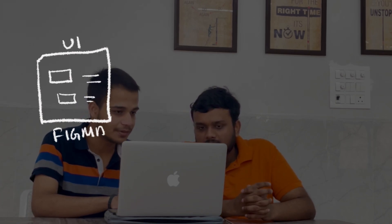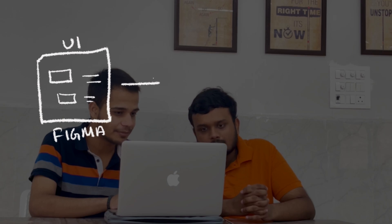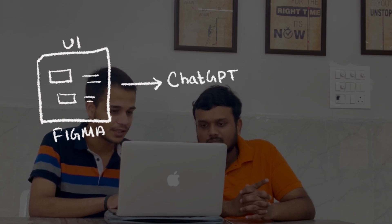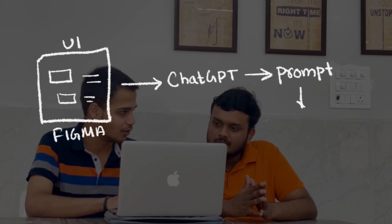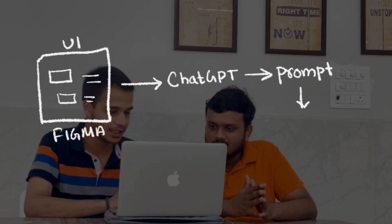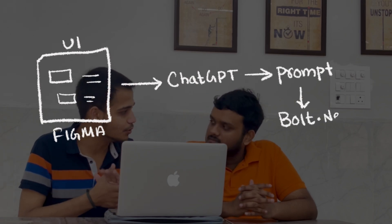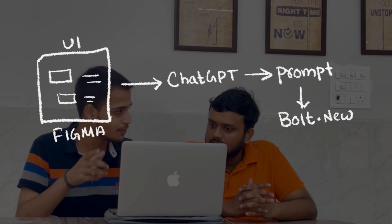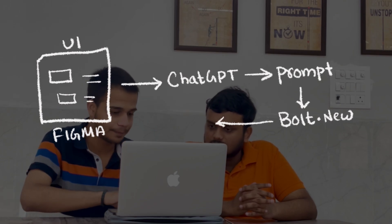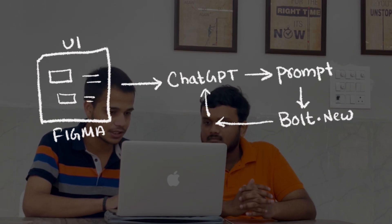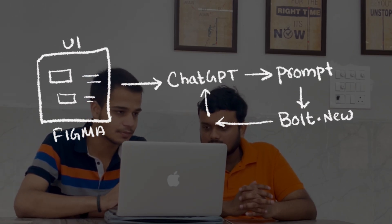Here is the plan for our web app: first, I will create a UI using Figma, designing it from scratch. Then we'll put a screenshot of that UI into ChatGPT, which will give us a prompt on how to create the app. After that, we'll use that prompt to generate the entire backend and frontend using a new AI tool called bold.new, which will help us generate the entire app from scratch.